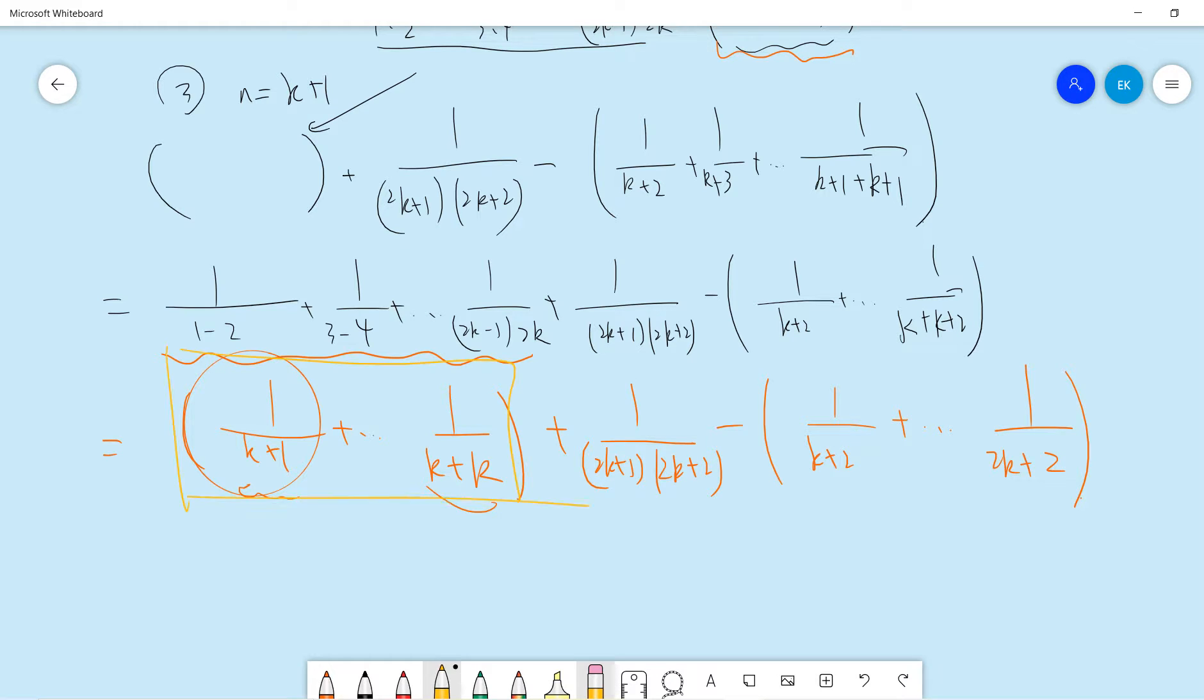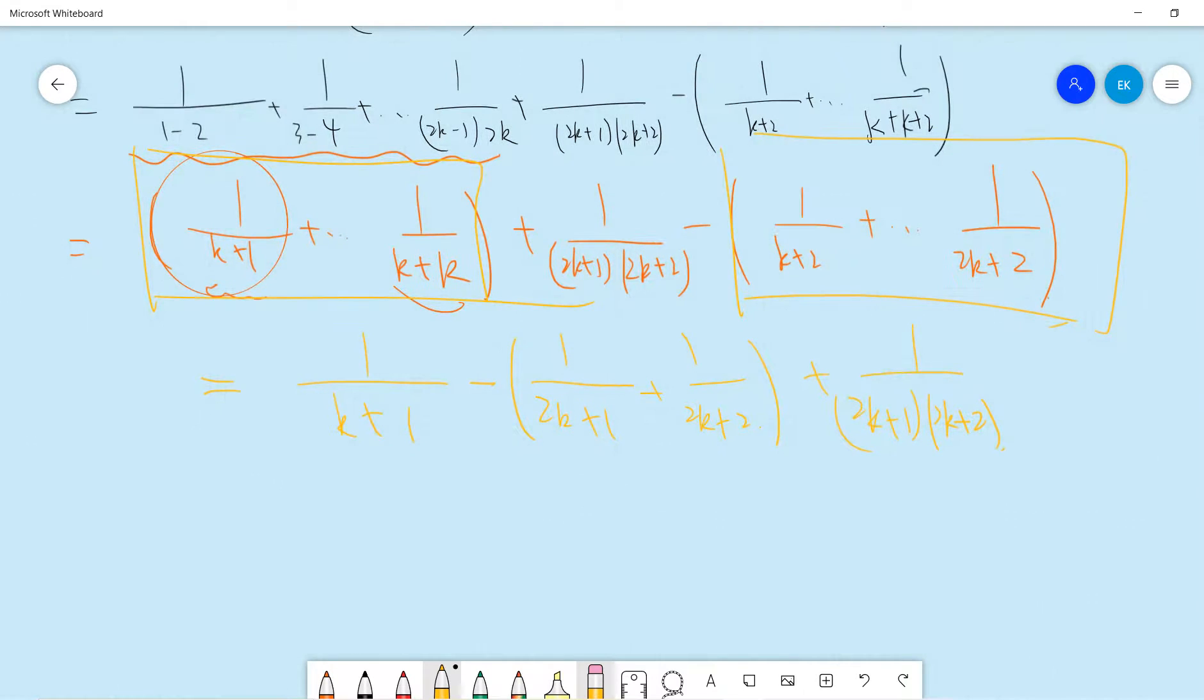So that means these two parts, after computation will be 1 over k plus 1, right? Okay, k plus 1 survive, and plus 1 over 2k plus 1 and 2k plus 2. Sorry, minus, sorry, minus these two survive, plus 1 over 2k plus 1, 2k plus 2. Okay, so finally, the final goal for you guys is just check this is 0. So maybe let's do it.